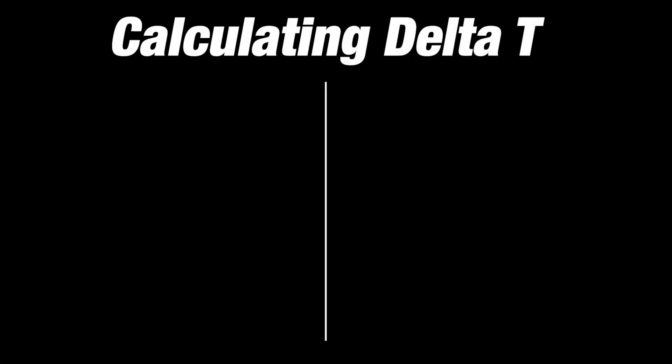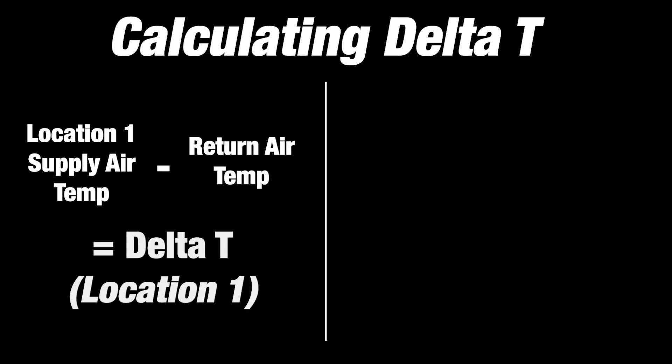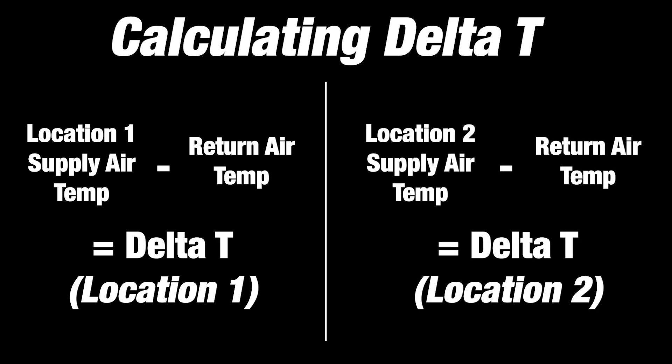To calculate Delta T, take the supply air temperature from one of the locations and subtract the return air temperature. Repeat this calculation for the other supply air location, which will give you an indication of how the A-coil is affecting the temperature.